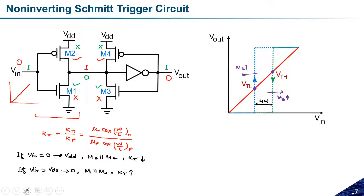M1 and M2 also contribute — they will also reflect the effective transition. So the sizing of M1 and M2 will also have an impact on the hysteresis width. M4 and M3 are the primary transistors responsible for changing the hysteresis, while M1 and M2 are the normal inverter transistors — but yes, they are equally contributing components. This is all about the non-inverting Schmitt trigger circuit.